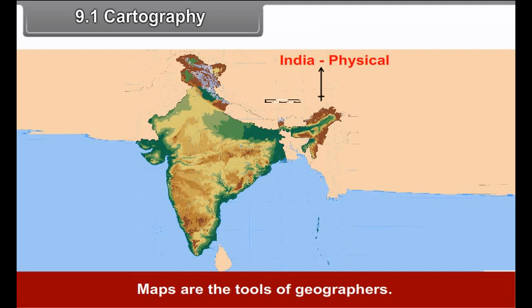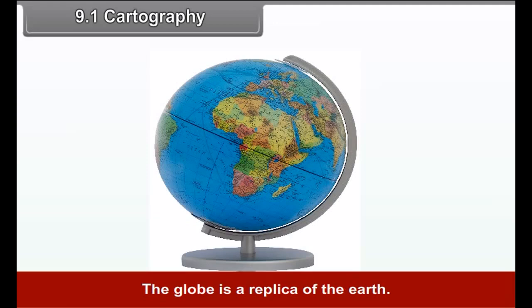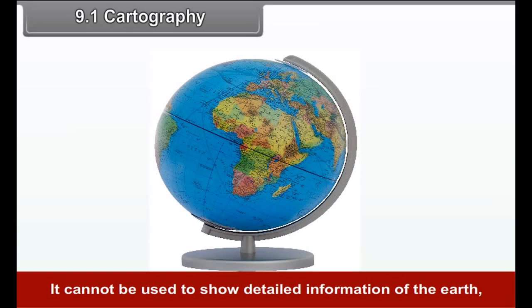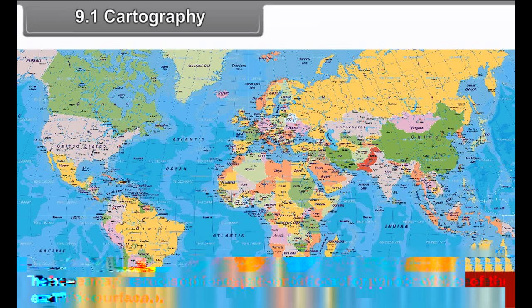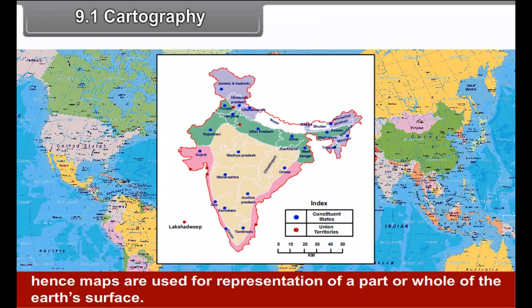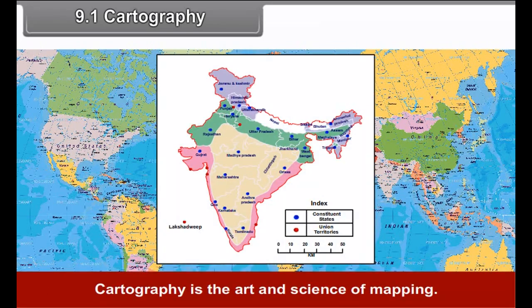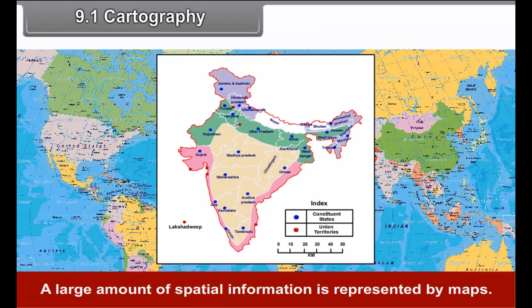9.1 Cartography. Maps are the tools of geographers. Geography can be understood well with the help of maps. Geographical features are often represented by maps. The globe is a replica of the Earth. It cannot be used to show detailed information of the Earth. Hence, maps are used for representation of a part or whole of the Earth's surface. Cartography is the art and science of mapping. A large amount of spatial information is represented by maps.